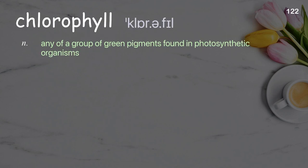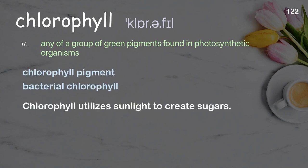Chlorophyll. Any of a group of green pigments found in photosynthetic organisms. Examples: chlorophyll pigment, bacterial chlorophyll. Chlorophyll utilizes sunlight to create sugars.